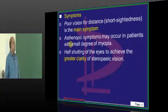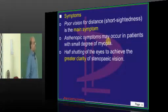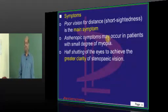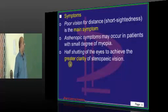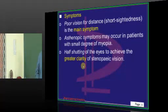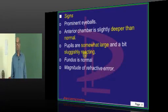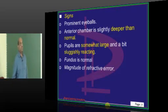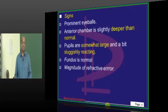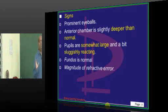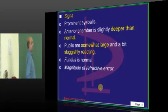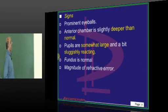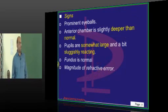The main symptom is poor vision for distant objects. Then there will be asthenopic symptoms — tiredness of the eye. Half-shutting of the eyes to achieve greater clarity is another important presenting feature. The classical clinical signs include an increase in the axial length of the eyeball — prominent eyeballs carry a risk of developing myopia.